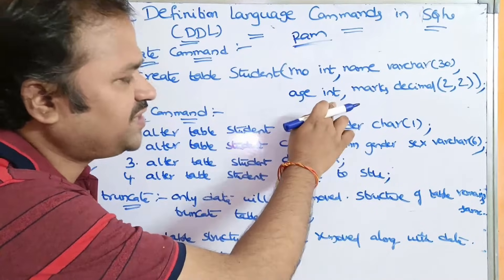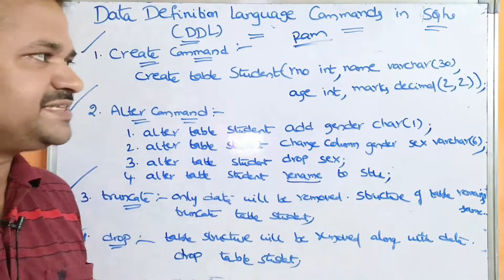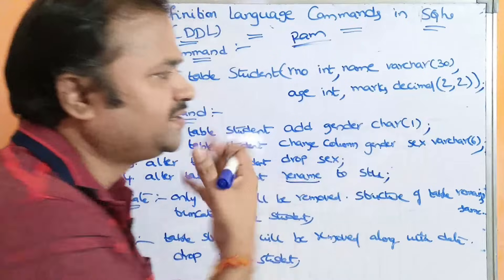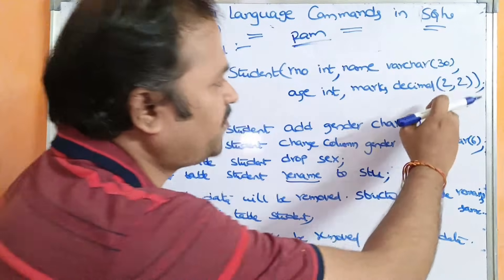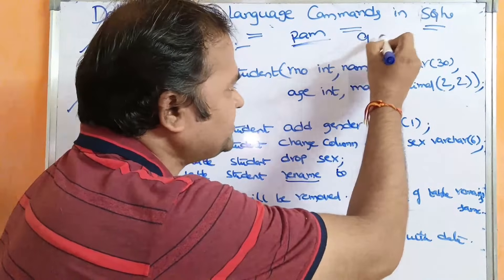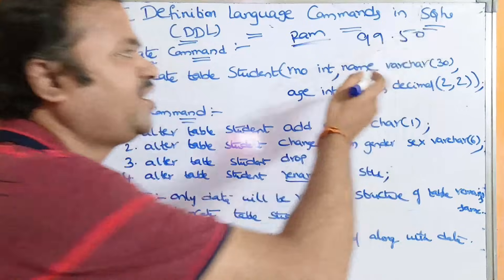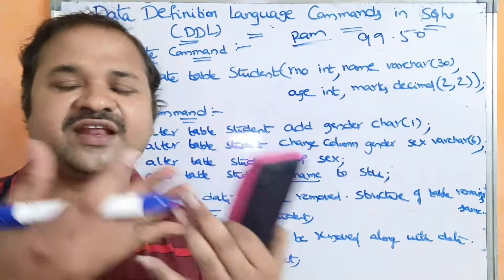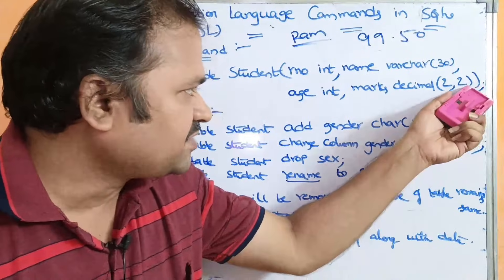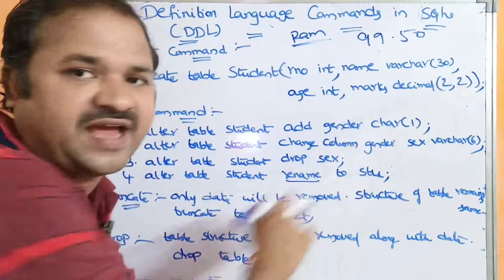The next column is 'age', which is of type integer. The last column is 'marks', which is of type DECIMAL. DECIMAL accepts values where the first number is the integer part and the second number is the decimal fractional part. For example, DECIMAL(2,2) means a maximum of 2 integer digits — so the maximum is 99 — and maximum 2 decimal points, like 99.50. We then close with a right parenthesis and semicolon.